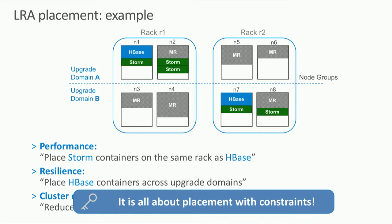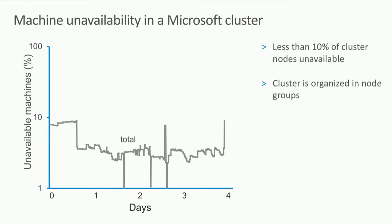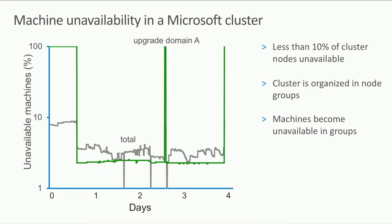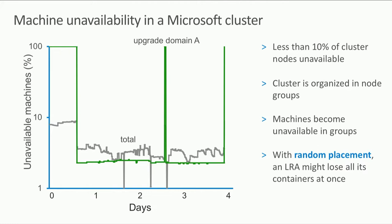Let me double-click on the resilience part. Looking at one of Microsoft's large clusters with tens of thousands of machines, I plotted the unavailability — the percentage of machines that are unavailable over four days. In total, less than 10% of nodes are down at any moment, due to failures or software upgrades. However, when looking at specific upgrade domains, there are moments where an entire upgrade domain is 100% down. If we deploy long-running applications randomly, we might place all of them on the same upgrade domain and lose all containers.